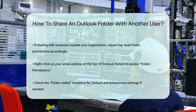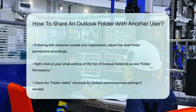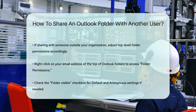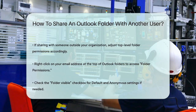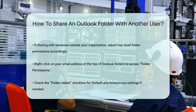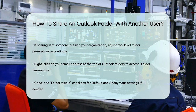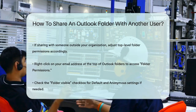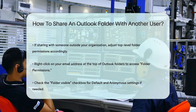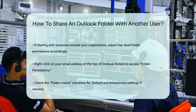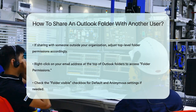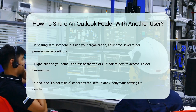Remember, if you're sharing a folder with someone outside your immediate team or organization, you might need to adjust the top-level folder permissions by right-clicking on your email address at the top of your Outlook folders and selecting Folder Permissions. Here you'll need to check the Folder Visible checkbox for the default and anonymous settings.